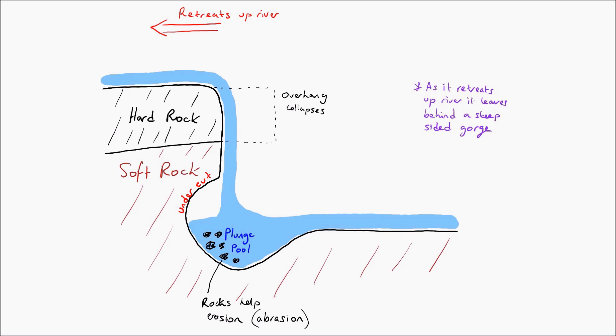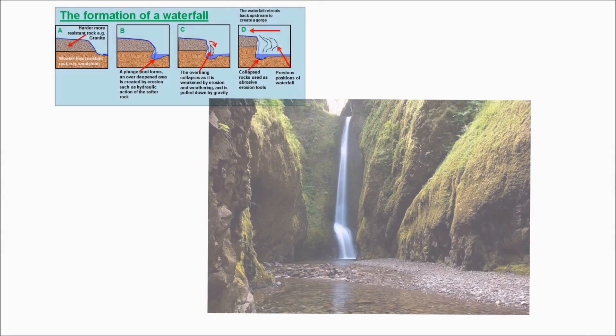As the waterfall retreats upstream, it forms a steep-sided gorge. You can see in these photos that I've included the process at the top and an example of a waterfall on the right-hand side. I've marked in the plunge pool, and you can also see the steep-sided gorge. This would be quite a typical waterfall that can form.